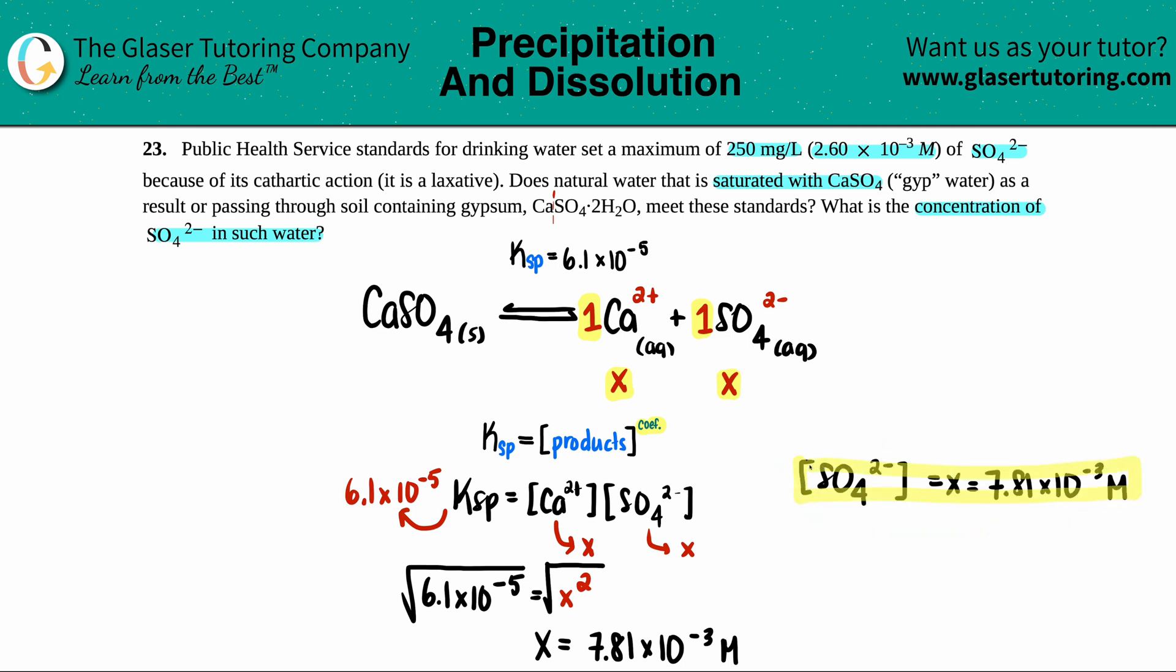Now for the real question that we've been dying to answer, is this going to make you go to the bathroom or not? Well, here is the number right here, 2.60 times 10 to the negative third. This value, is that higher or lower than 2.6 times 10 to the negative third? Yeah, this is, of course, of course they had to do this. This is higher than 2.60 times 10 to the negative third molarity.